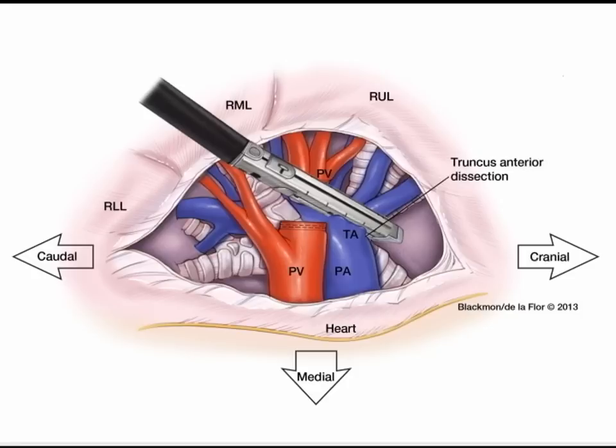When dissecting the truncus anterior branches of the superior right upper lobe for a right upper lobectomy, these branches may bifurcate early or late. You dissect around the vessels, opening up the entry point and the exit point, and then pass the stapler around this structure, completely stapling and dividing the truncus anterior of the pulmonary artery.